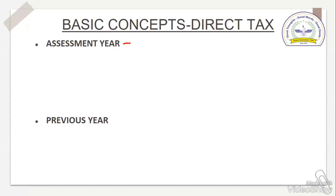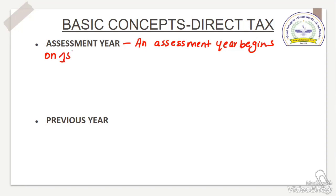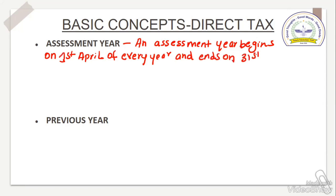It is very important in basic concepts to know assessment year, previous year, and assessee. We are starting with assessment year. An assessment year begins on 1st April of every year and ends on 31st March of next year. This is assessment year.